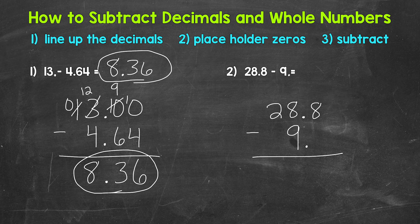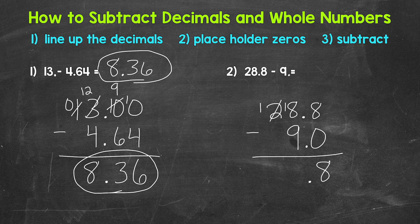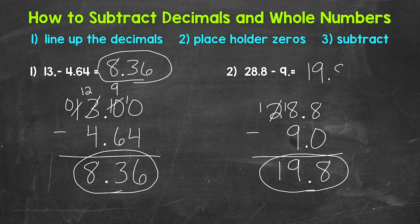Since 28 and 8 tenths goes to the tenths place, let's use a placeholder zero here so that 9 goes to the tenths place as well. Now we can subtract. We start with 8 minus 0 in the tenths place — that gives us 8. Then we bring the decimal straight down. Next, 8 minus 9 requires borrowing: this 2 is now a 1, and we have 18 minus 9, which gives us 9. Then we have 1. So our final answer is 19 and 8 tenths. So 28 and 8 tenths minus 9 equals 19 and 8 tenths.